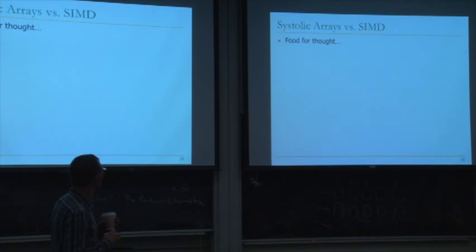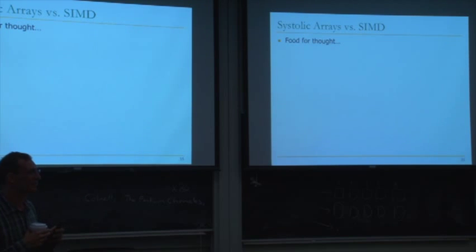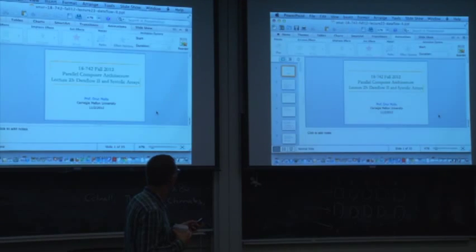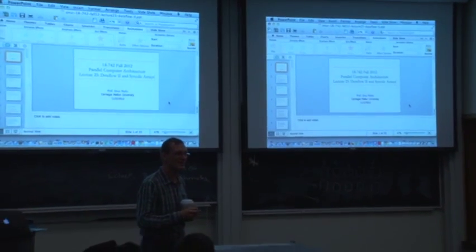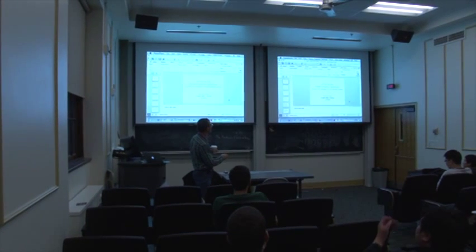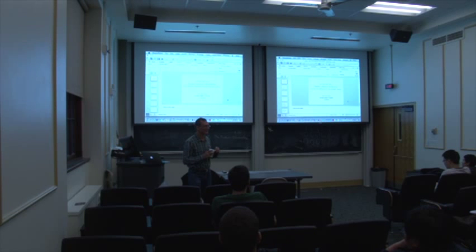That's all I have. I'll leave you with this question: what are the differences between systolic arrays and SIMD? What are the advantages and disadvantages? They're both bad at exploiting irregular parallelism, but they're bad in different ways. We've covered a lot of models — two different ends: one execution model very good for regular parallelism, and one very good for irregular parallelism.